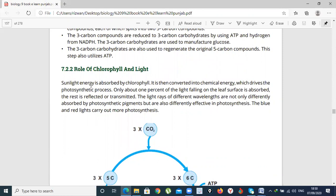Sunlight energy is absorbed by chlorophyll. It is converted into chemical energy. Chlorophyll's work is that it absorbs light and converts it into chemical energy which drives the photosynthetic process. We have talked about chemical energy which drives the photosynthetic process. What will it do with photosynthetic process? Light energy.